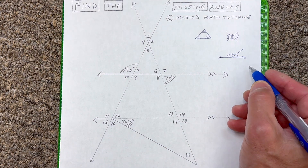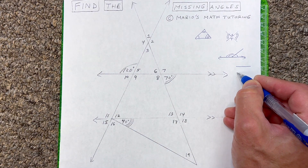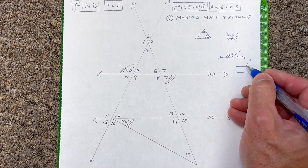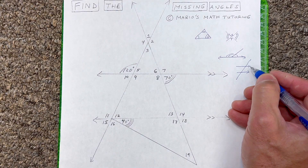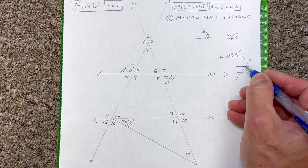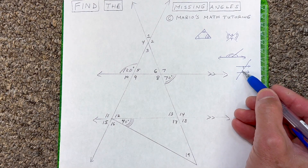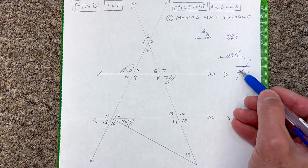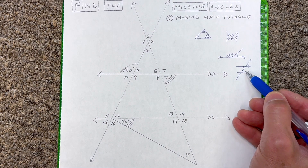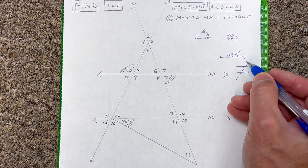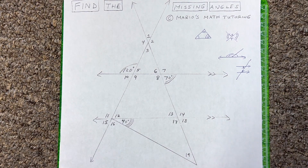Lastly, you want to know about parallel lines cut by a transversal. When you have two parallel lines cut by a third line, we call that the transversal. The angles in between the parallel lines are called alternate interior angles — 'interior' meaning in between, 'alternate' meaning one's on the left and one's on the right — and those two angles are going to be congruent.